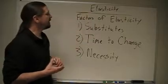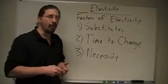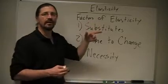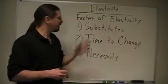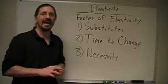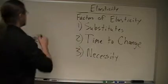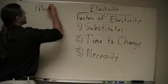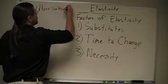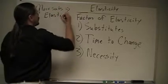All right, so elasticity, there are factors of elasticity. What makes a particular good more likely to be elastic or inelastic? The biggest factor is substitutes. If a particular good has lots of substitutes, then it's going to be elastic. So let's look at that. More substitutes equals more elastic.